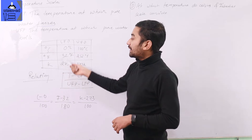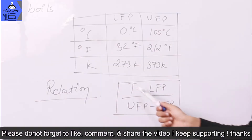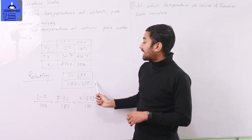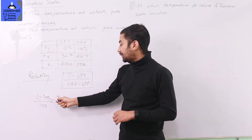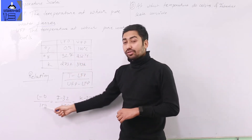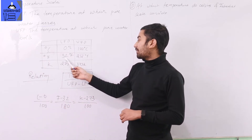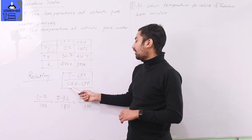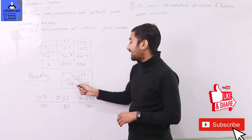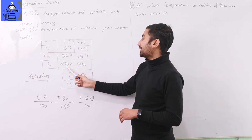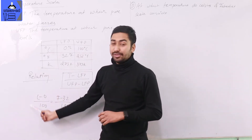Different scales have different upper and lower fixed point values, with different numbers of divisions. The relation between different scales is: (temperature on any scale minus lower fixed point) divided by (upper fixed point minus lower fixed point) is equal for all scales. So for Celsius: (C - 0) / (100 - 0); for Fahrenheit: (F - 32) / (212 - 32) = (F - 32) / 180; and for Kelvin: (K - 273) / (373 - 273) = (K - 273) / 100.